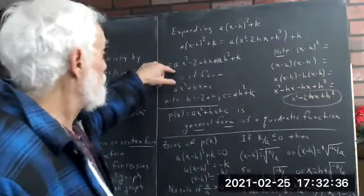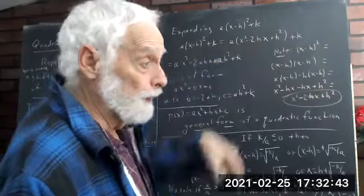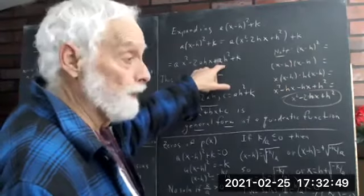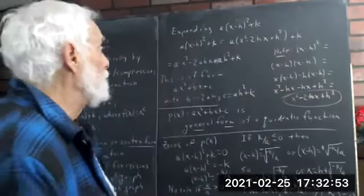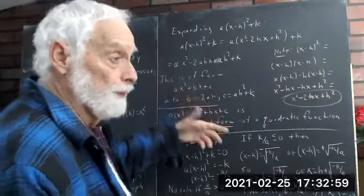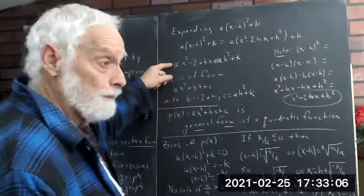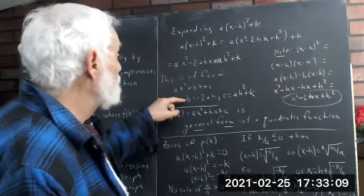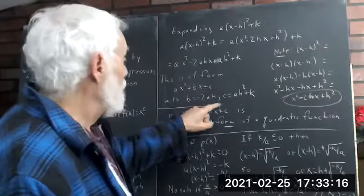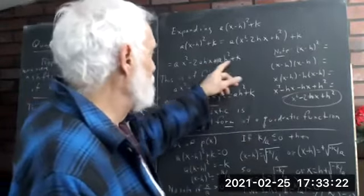Multiplying through by a, we get ax² − 2ahx + ah² + k. This is of the form ax²+bx+c — almost certainly a familiar form — where a is the same, b is the coefficient of x which equals −2ah, and c is what's left with no x, which is ah²+k. You don't have to remember that; this is just to show that the two forms are equivalent.